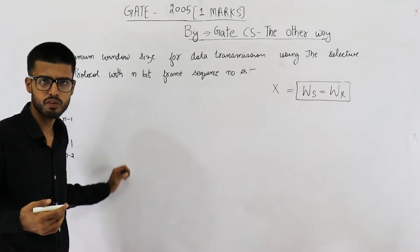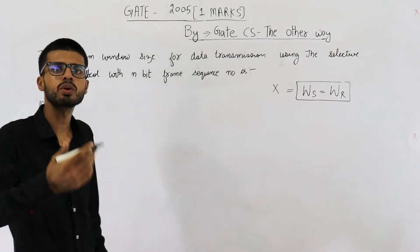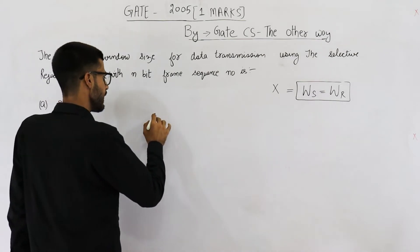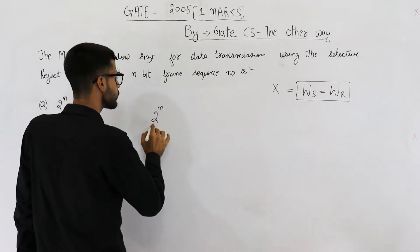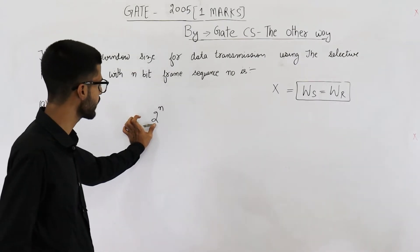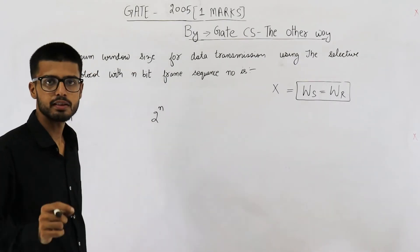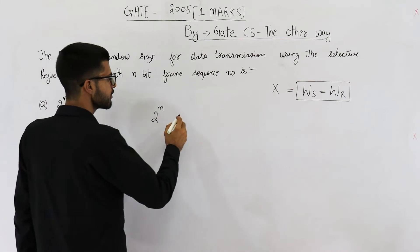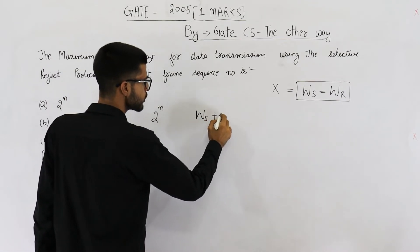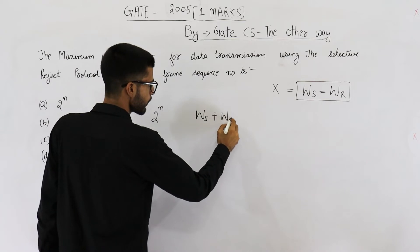Now if sequence number field is of n bits, what is the total number of sequence numbers that we can generate? With n bits you can generate 2 raised to the power n sequence numbers. Also it is a well known fact that sequence numbers will always depend on the window size of sender plus window size of receiver.